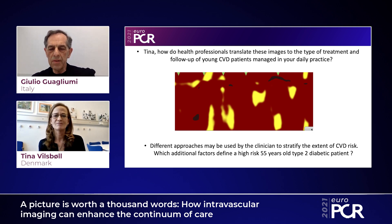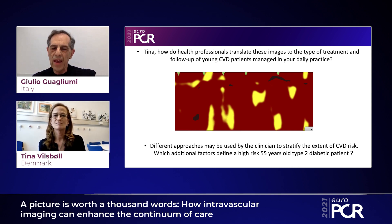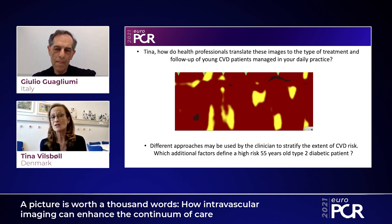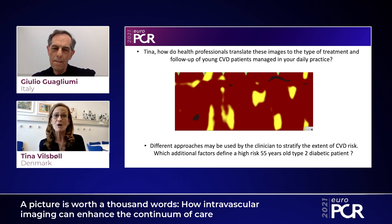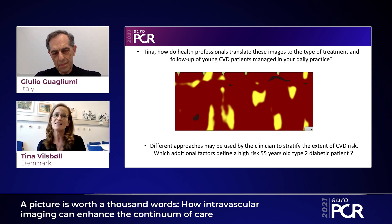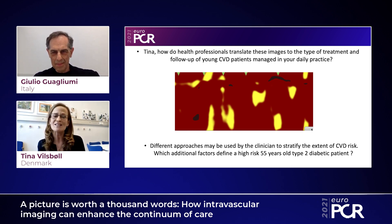Different approaches may be used by the clinician to stratify cardiovascular risk. Which additional factors define a high-risk, 60-year-old type 2 diabetes patient? There are many: smoking, dyslipidemia, hypertension, obesity and body composition, visceral fat, and more. But my challenge in the clinic is that it's really difficult to visualize many of these things and have the patient truly understand what the challenge is.